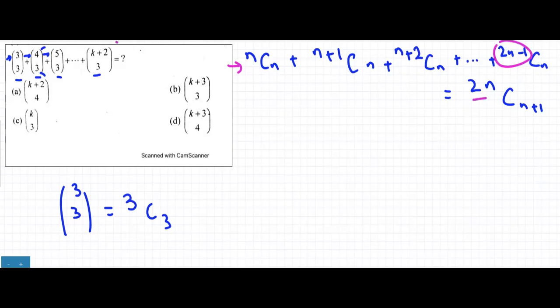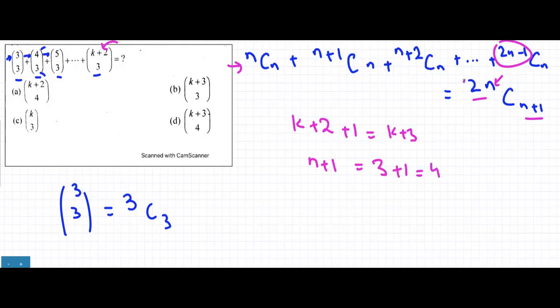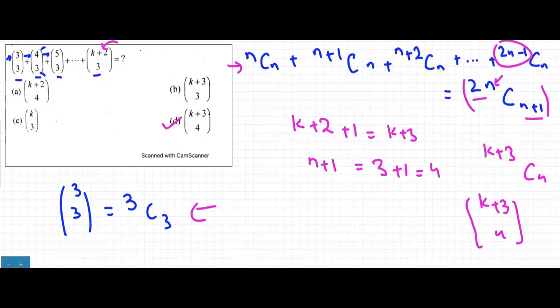Since the last term in our question is (k+2)C3, and 2n-1 corresponds to k+2, adding 1 gives k+3 for the 2n part. With n=3, we get n+1=4. So the final answer is (k+3)C4, which is written as C(k+3, 4). The answer is D.